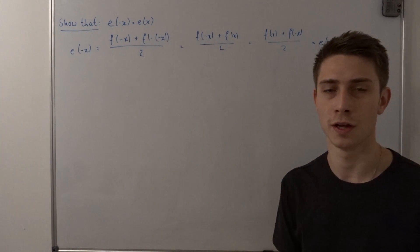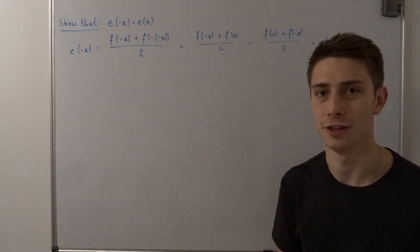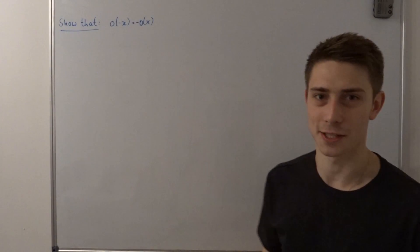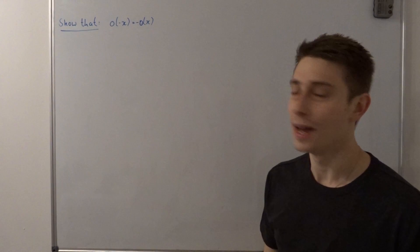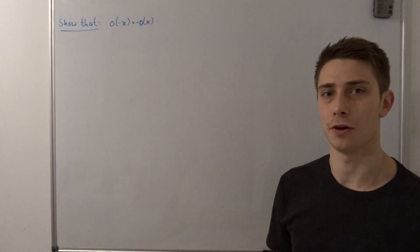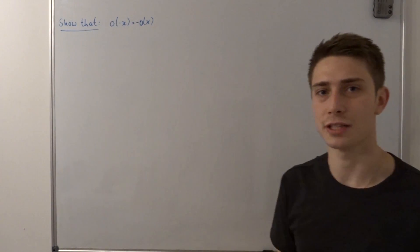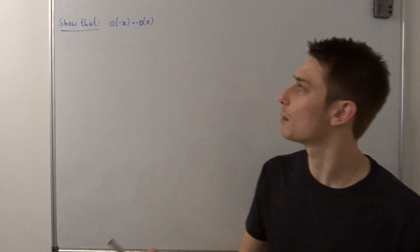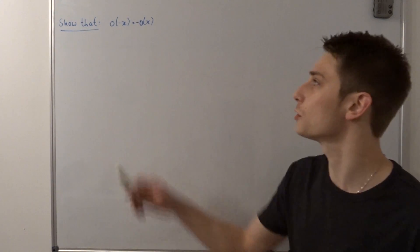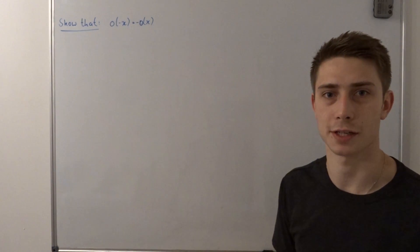Now we just have to prove that o of x is indeed an odd function. That's going to be fairly simple again. The definition of an odd function is that if you plug in minus x into an odd function it becomes minus the odd function in terms of x. So o of minus x equals minus o of x.